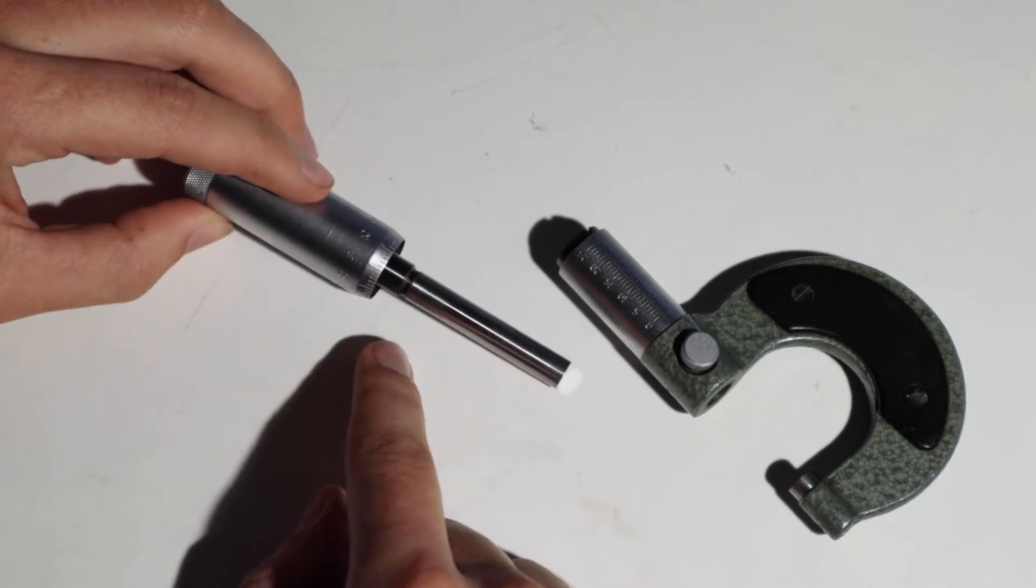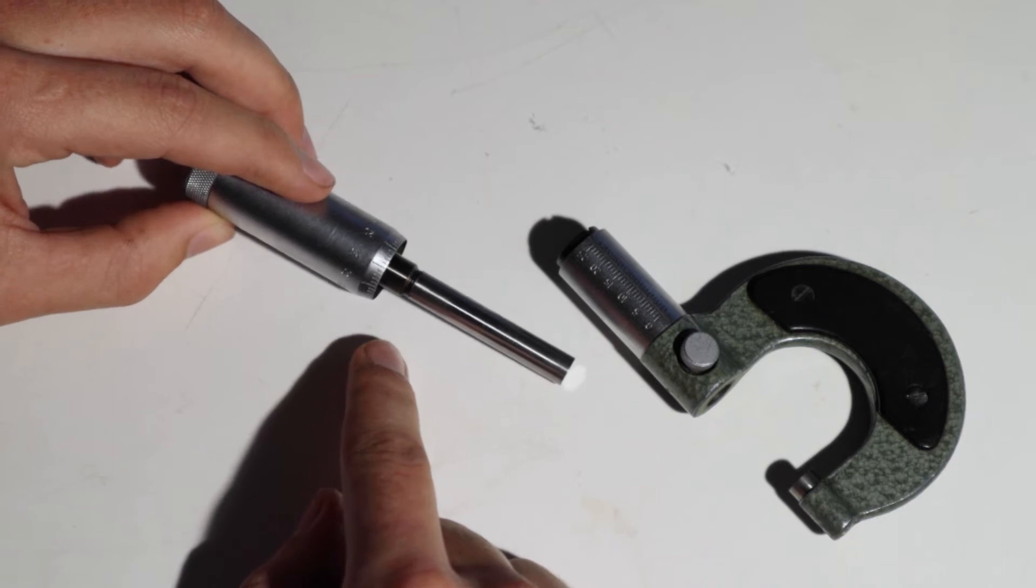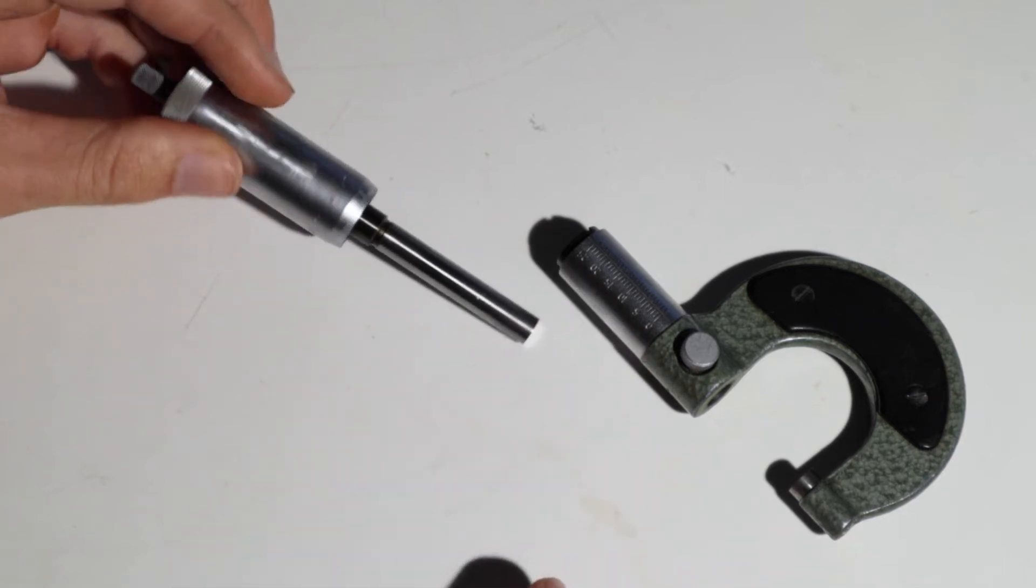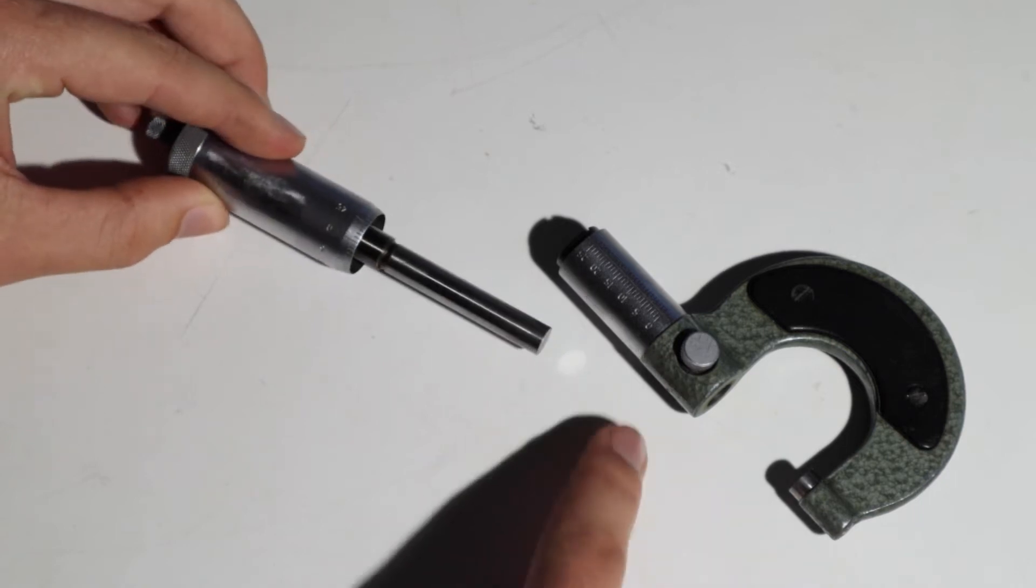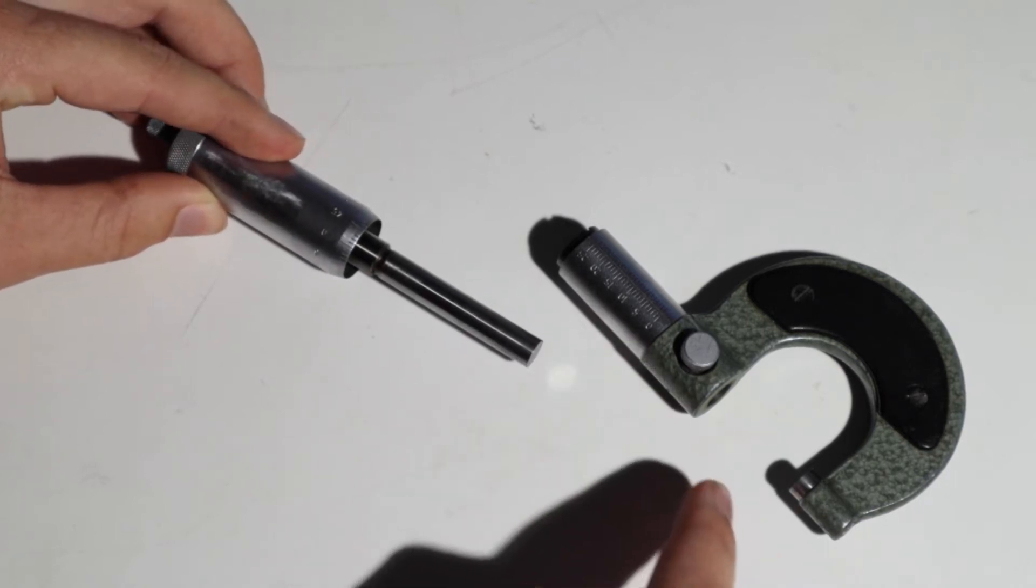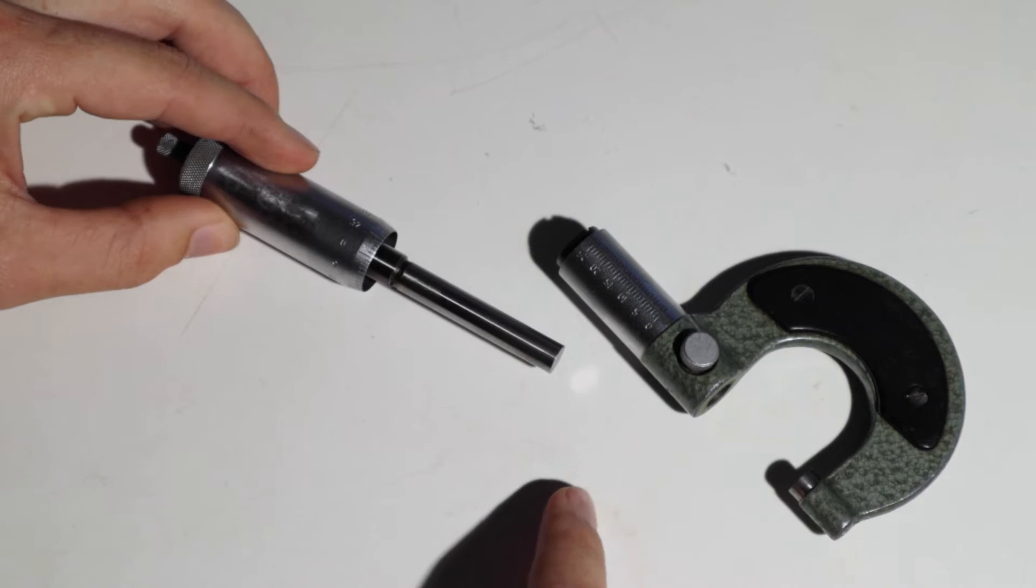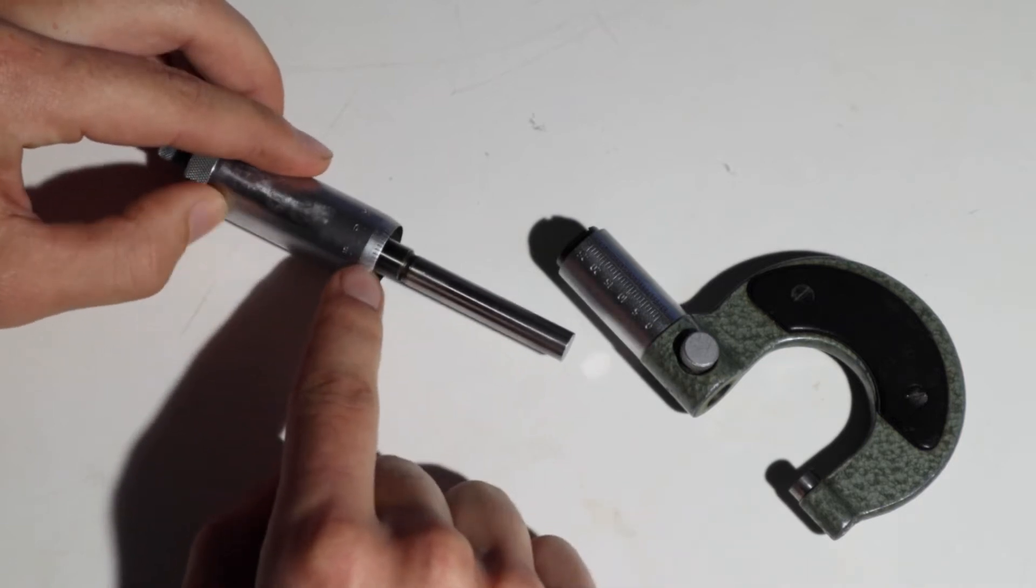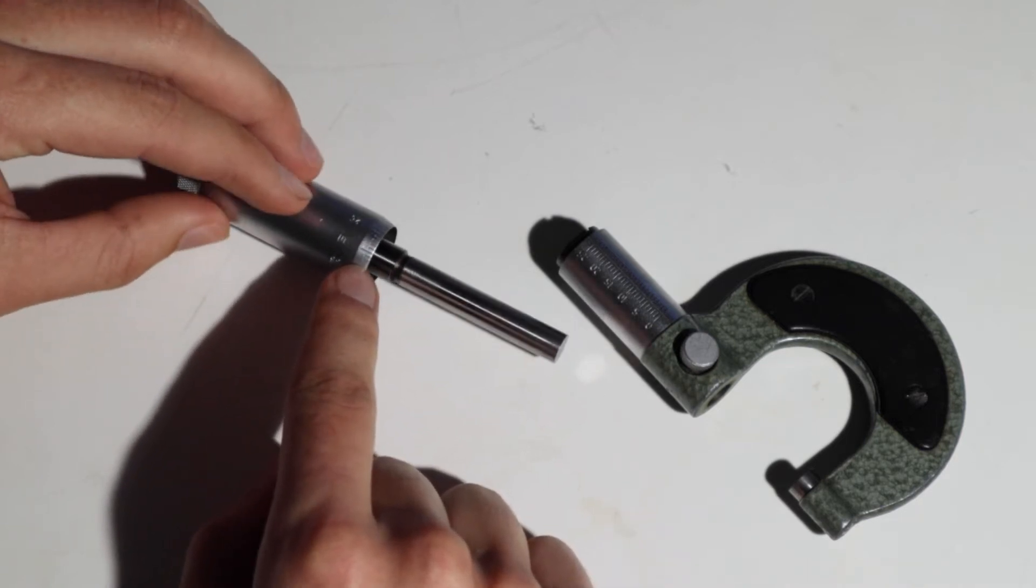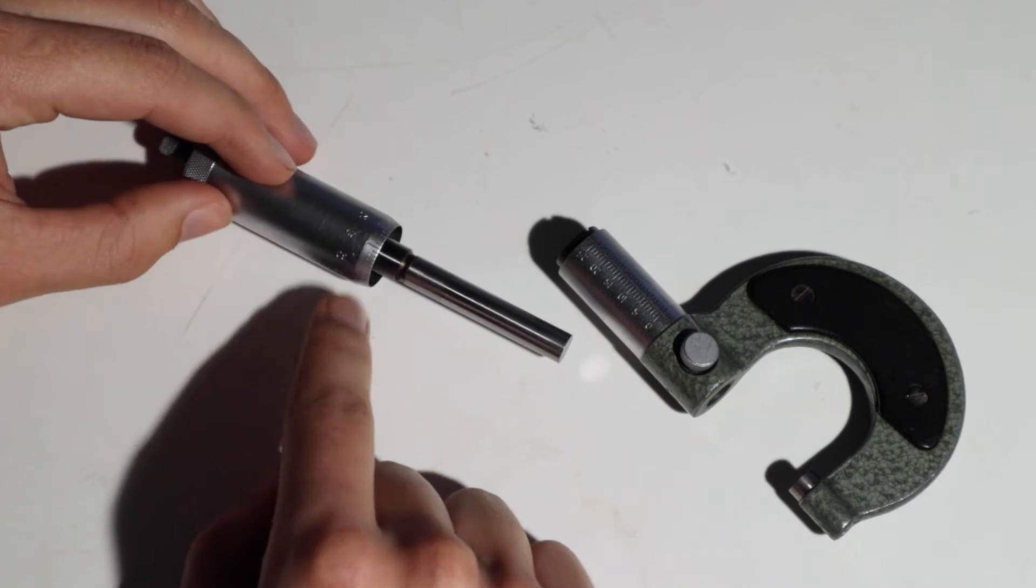It has a 0.5 millimeter pitch so when I rotate this thimble 360 degrees the measuring phase advances 0.5 millimeters and that's why this graduation here is divided in 50 pieces.